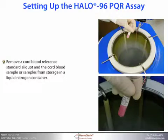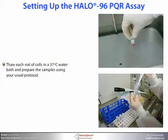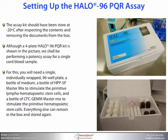First you need to remove the cord blood reference standard aliquot and the cord blood sample or samples from storage in a liquid nitrogen container. Thaw each vial of cells in a 37°C water bath and prepare the samples using your usual protocol. The assay kit should have been stored at minus 20°C after inspecting the contents and removing the documents from the box.